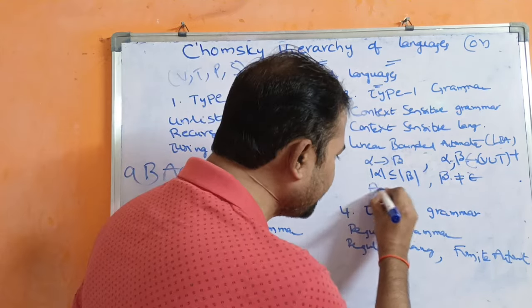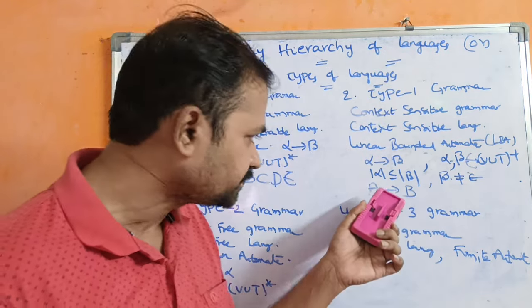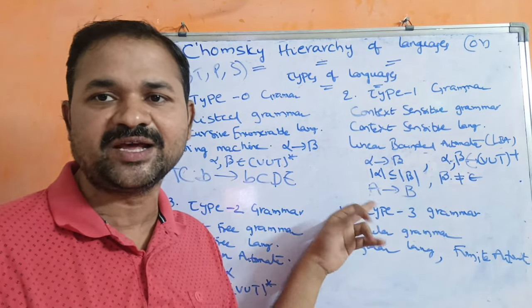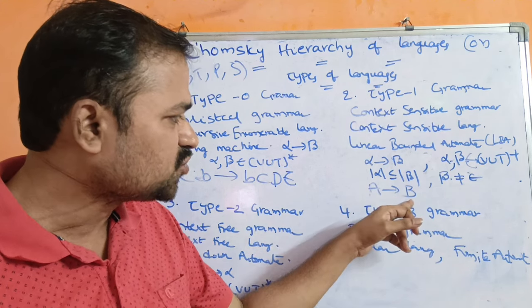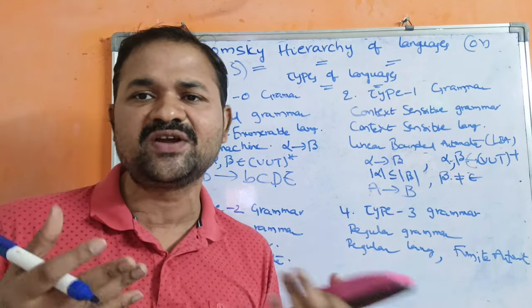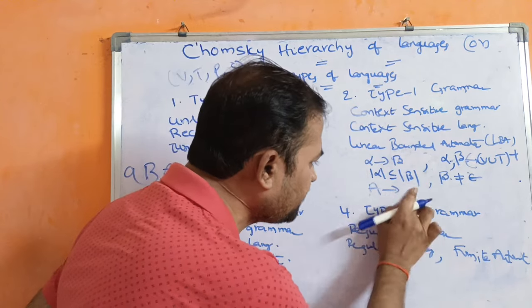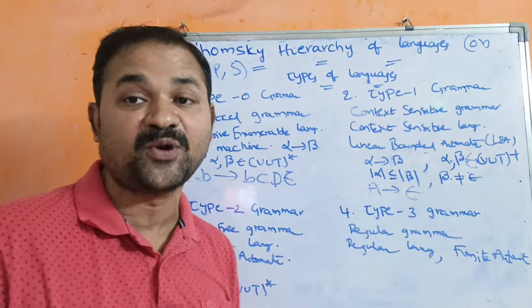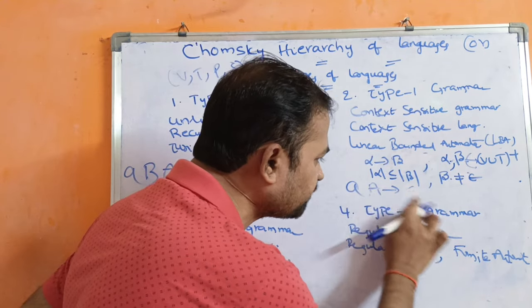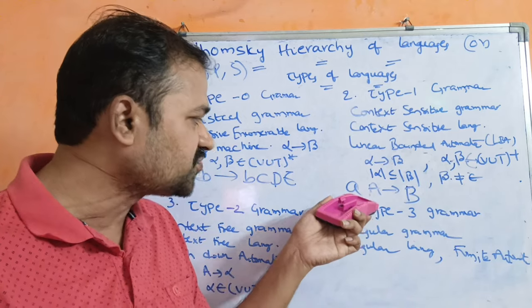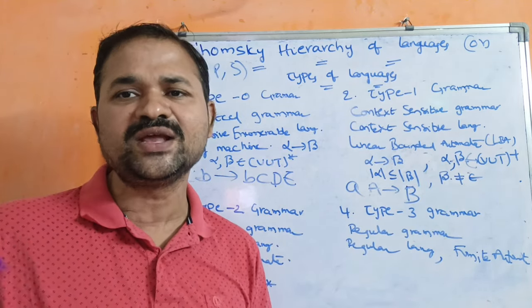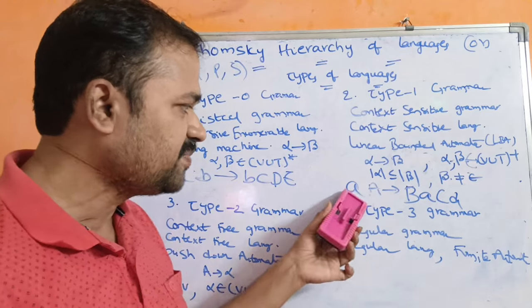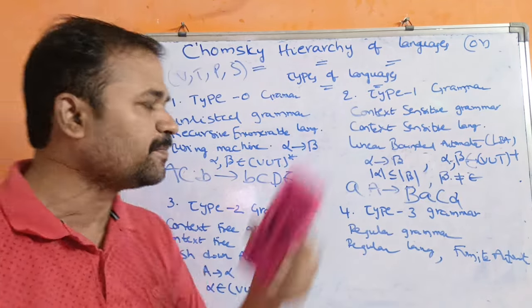Let us see some examples. A implies B: is it a valid context sensitive language production? LHS contains one non-terminal, length of A is 1, length of B is 1, so 1 less than or equal to 1 — this is a valid production. Next, A implies epsilon: is it valid? No, because RHS should not contain epsilon. Next, AA implies B: is it valid? No, because length of LHS is 2 and length of RHS is 1, and 2 is not less than or equal to 1. Next, BAC implies something of length 4: is it valid? Yes, because 2 is less than or equal to 4. So this is about type 1 grammar.